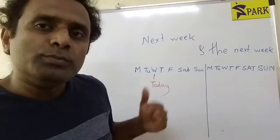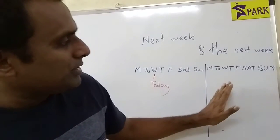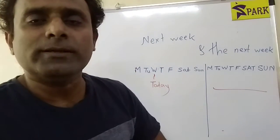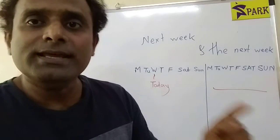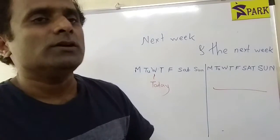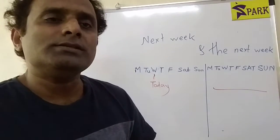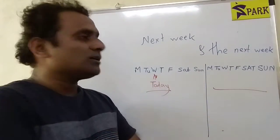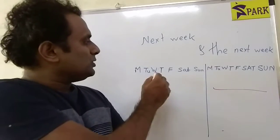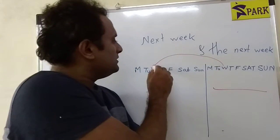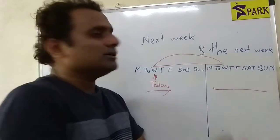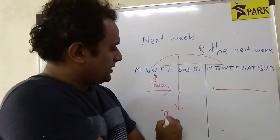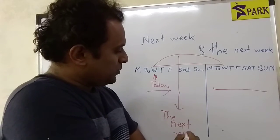If I say 'I am busy next week,' I'm busy in that upcoming calendar week. But if I say 'I am busy the next week,' that means I'm busy for the next seven days starting from today — starting from Wednesday. So 'the next week' refers to the coming seven-day period from the current day.